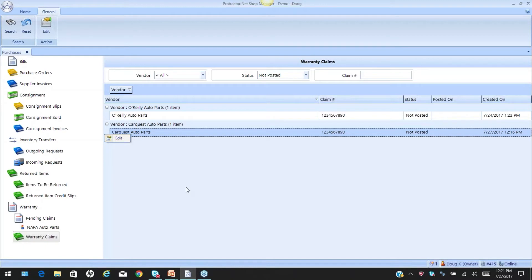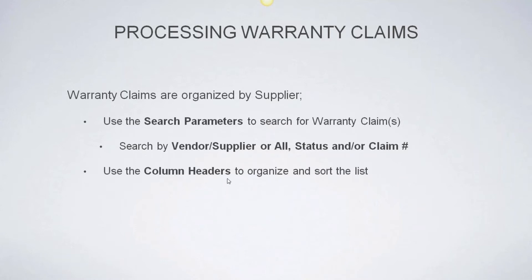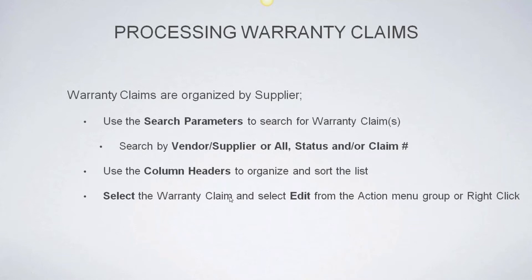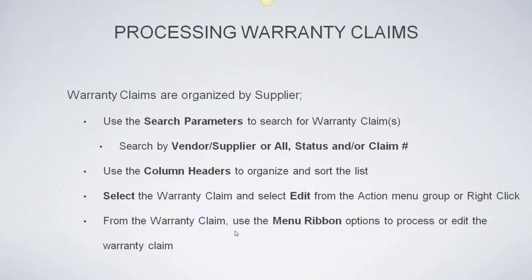Let's go back to the presentation for a second. Warranty claims are organized by supplier. Use the search parameters to search by vendor or supplier, search on all suppliers, search on status, or search on a claim number. Use the column headers to organize, and remember you can drag that column up to group items by supplier. Select a warranty claim and select edit from the action menu group or from a right-click. From the warranty claim menu, use the main ribbon options to process or edit the warranty claims.